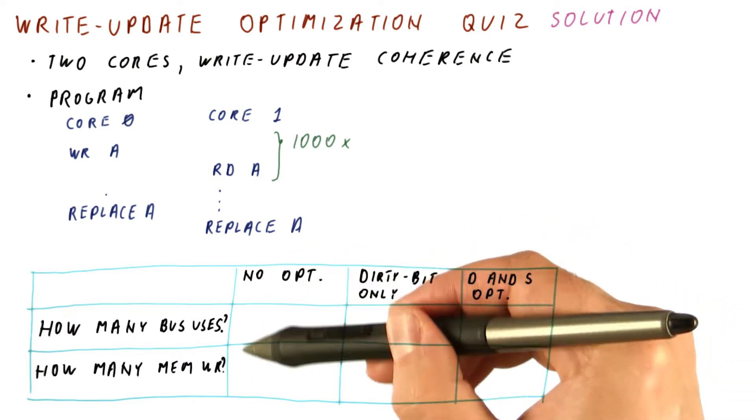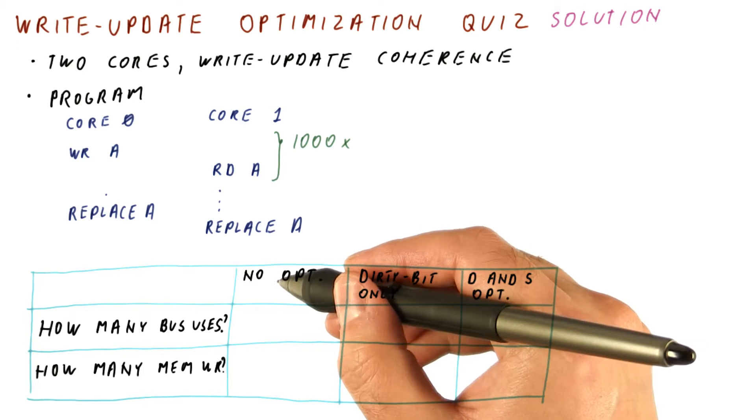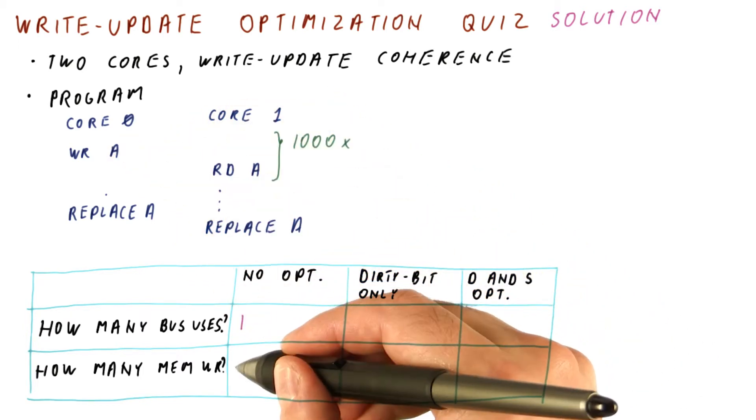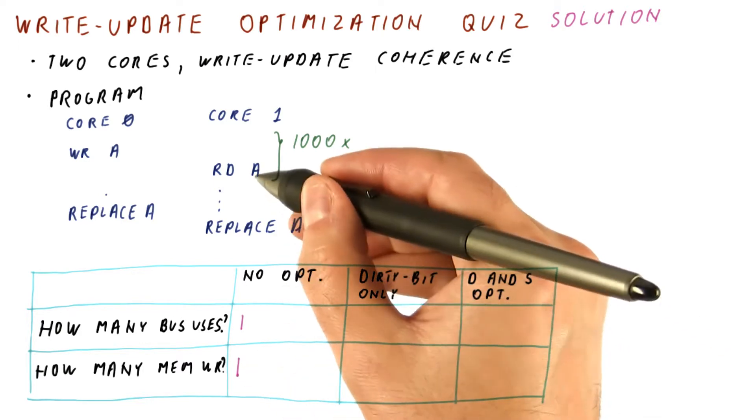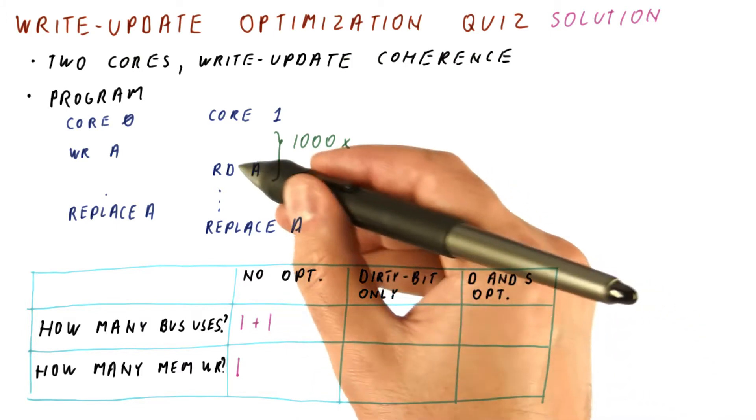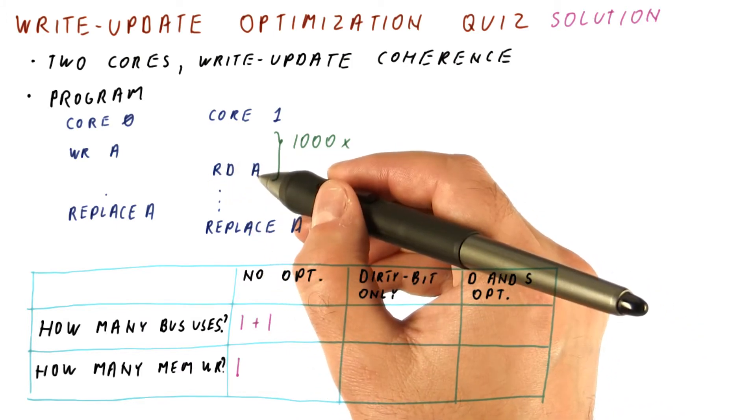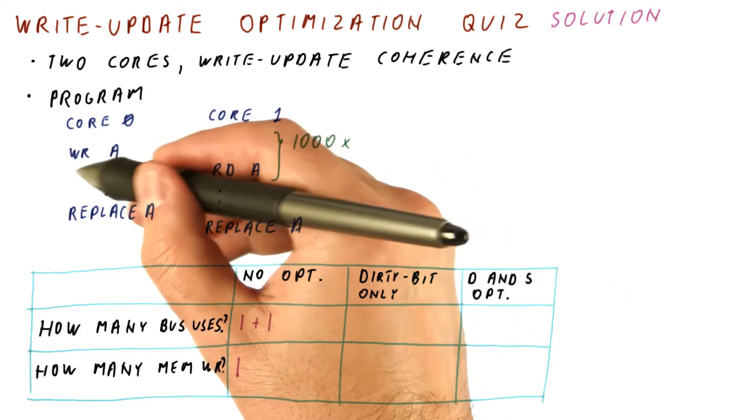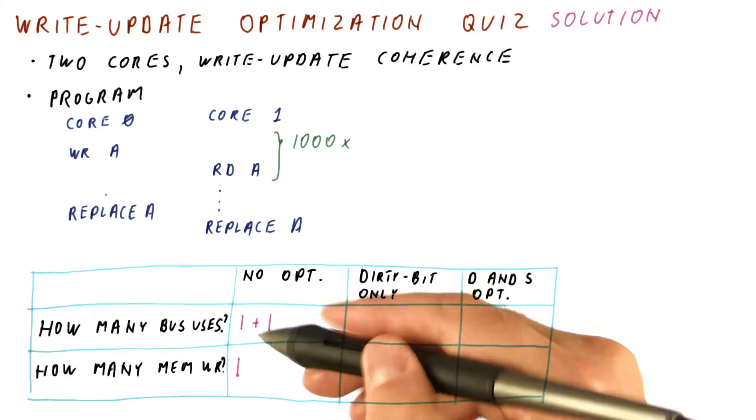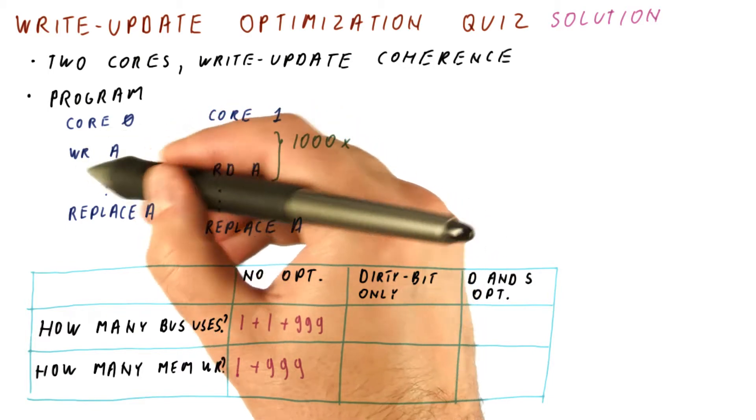Let's consider the case of no optimization first. This write here will use the bus and will write to memory. This read here, the first one, will use the bus but will not update the memory, because this is a read miss. From then on, each write on core 0 will use the bus to broadcast and update memory, so we get 999 more accesses to each because of this.